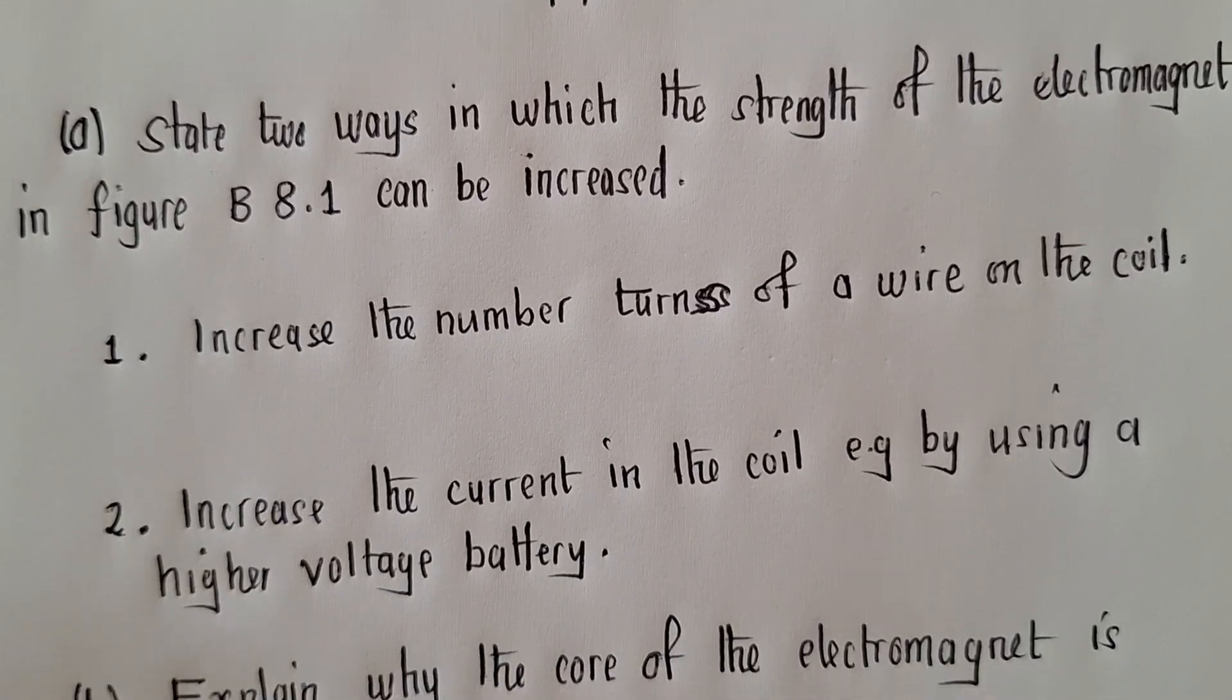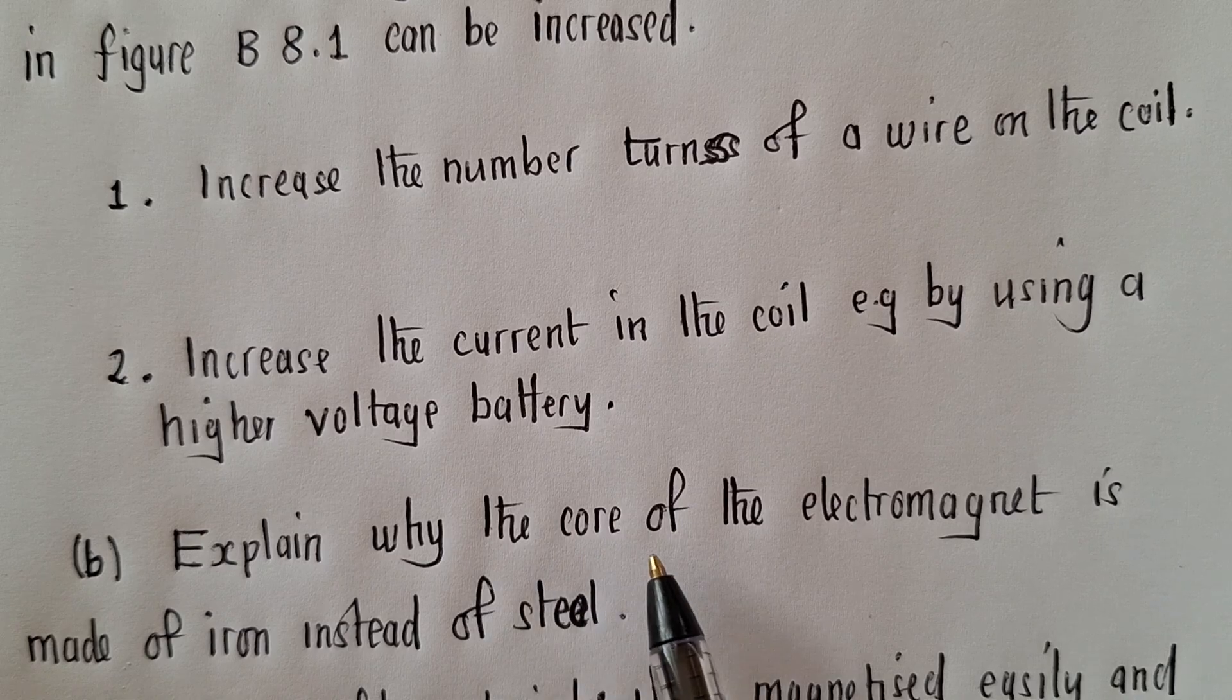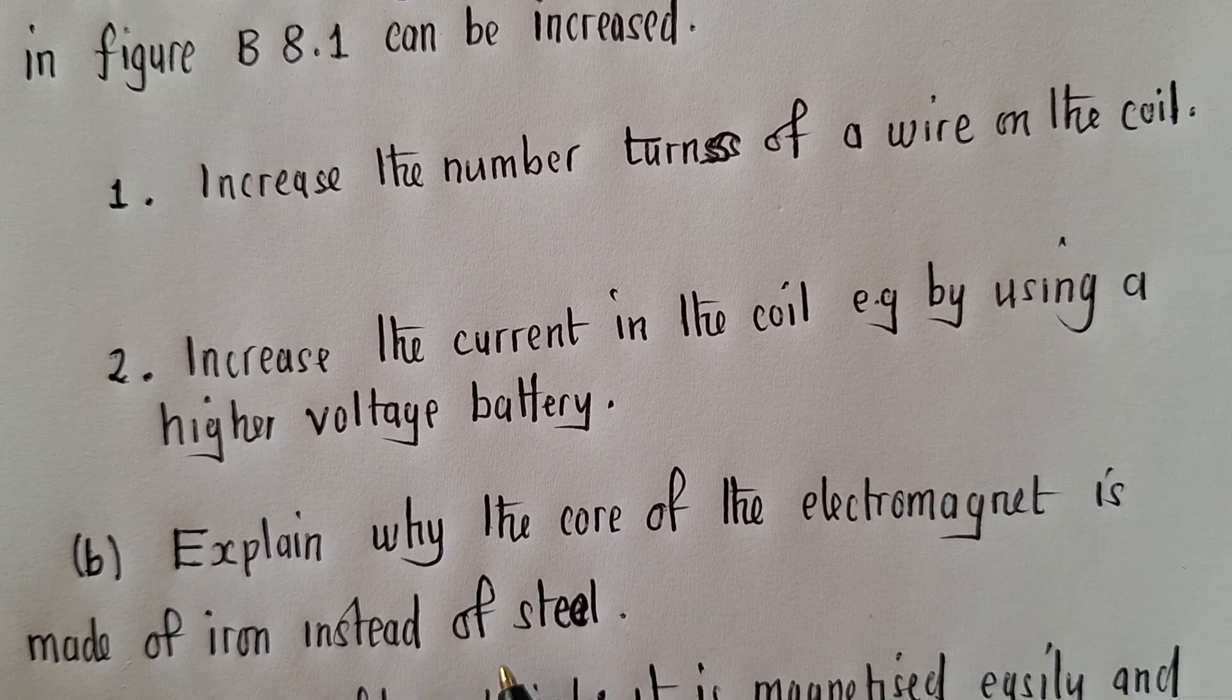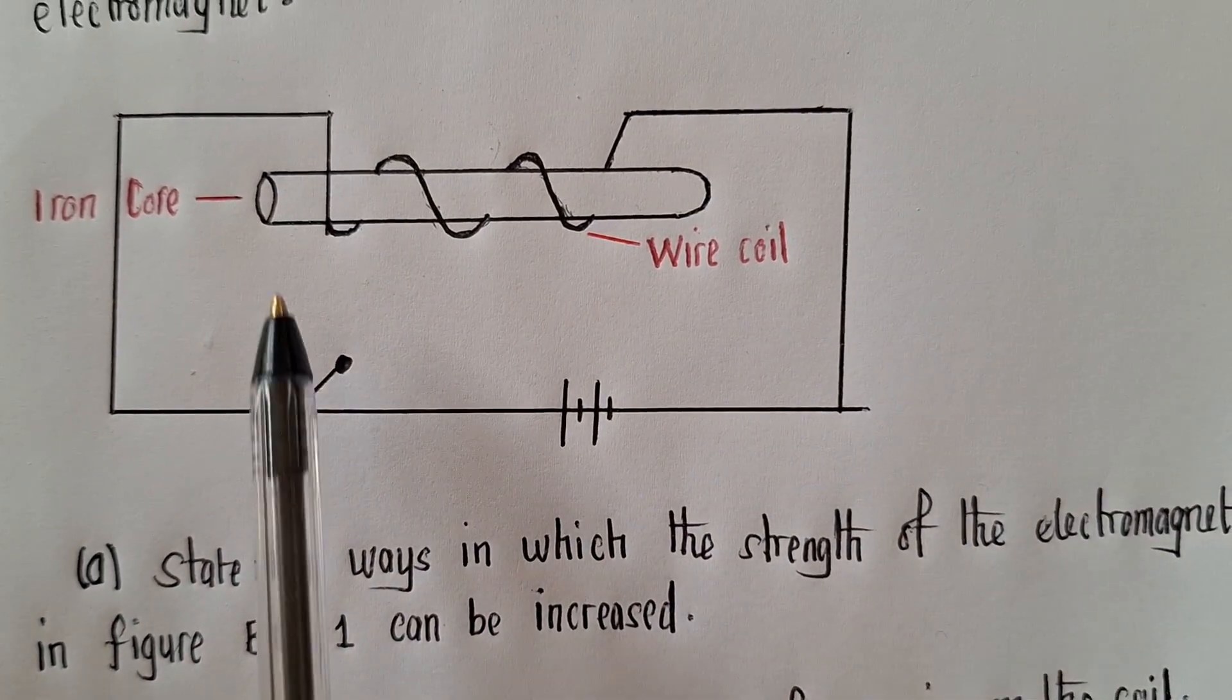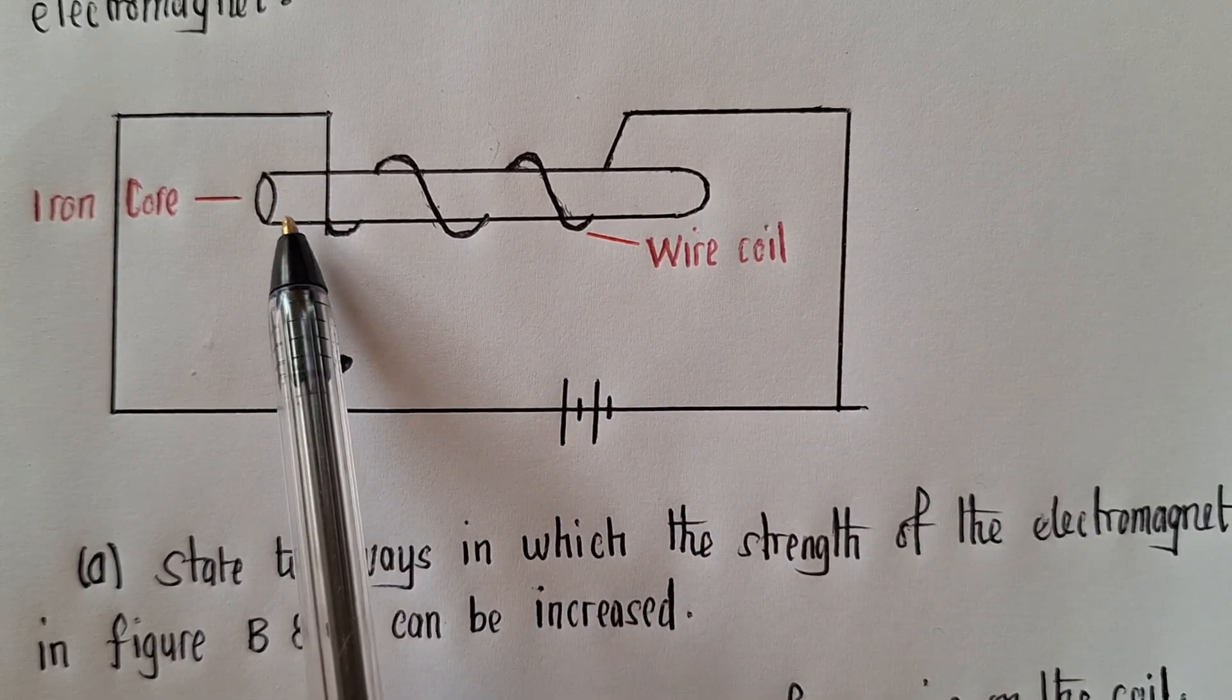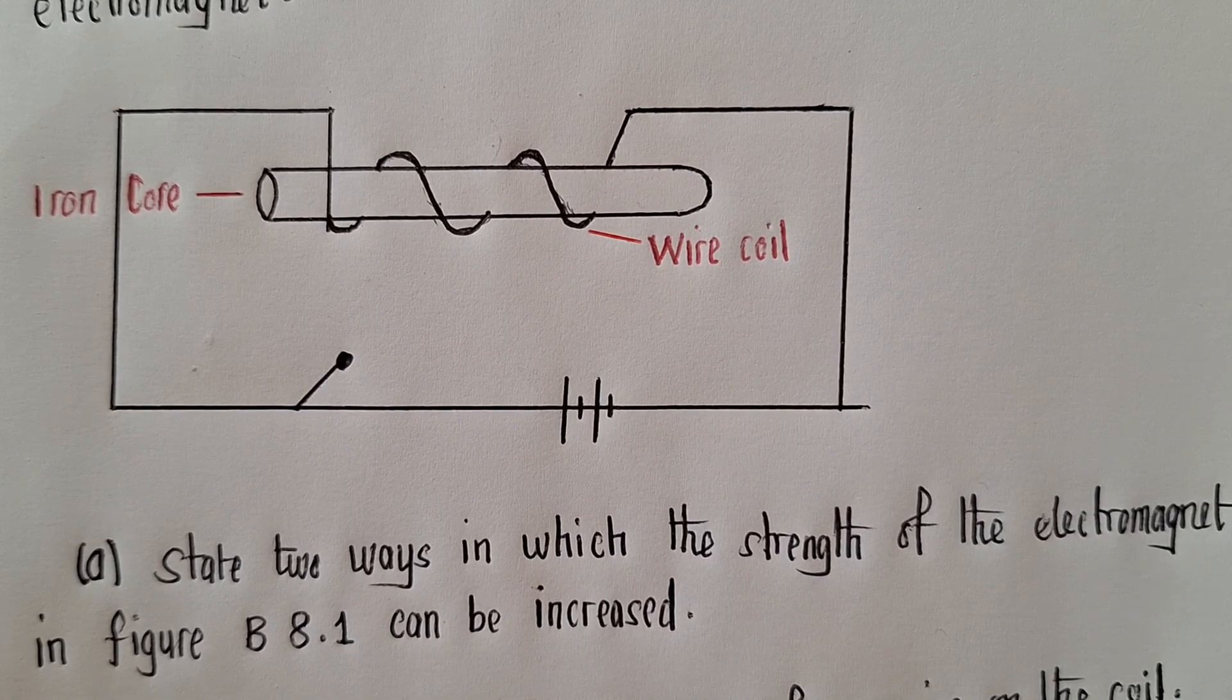Let's go to the next question. The next question, which is question B, they are saying explain why the core of the electromagnet is made of iron instead of steel. So look at this. The core that we are talking about is right over here. This is the core we are talking about. Now, why do you think this core is made out of iron instead of steel?